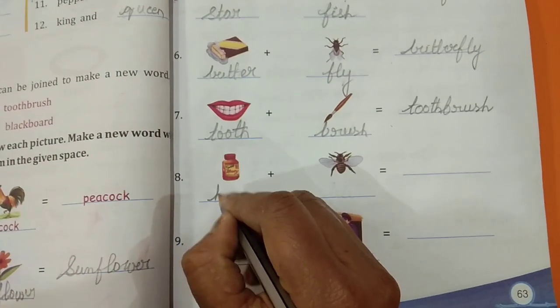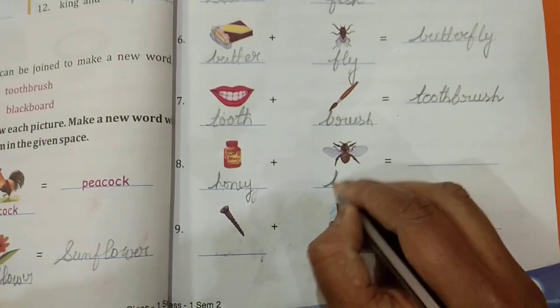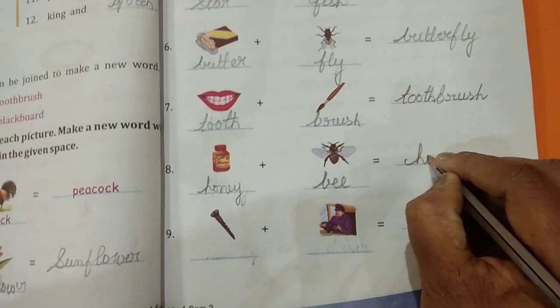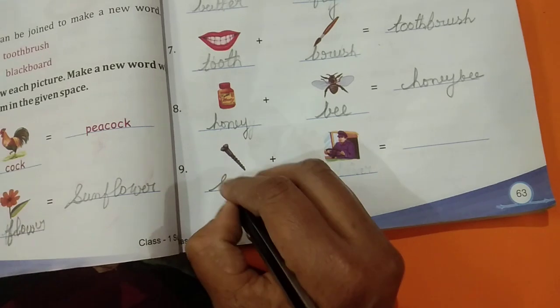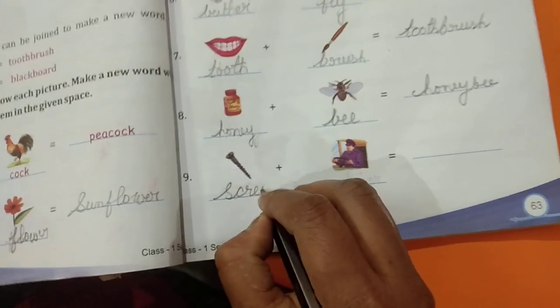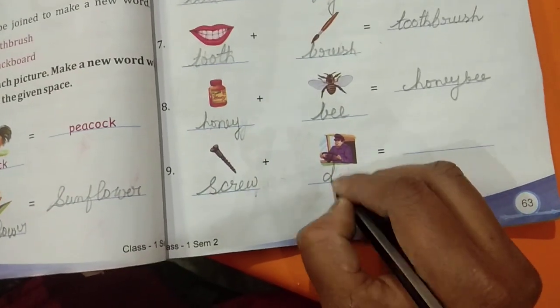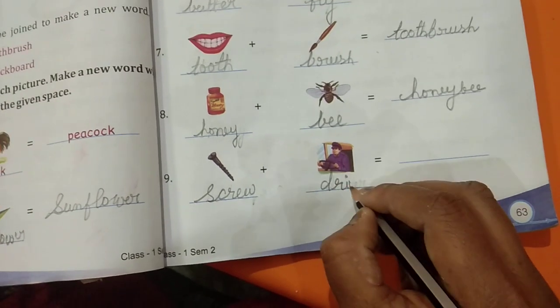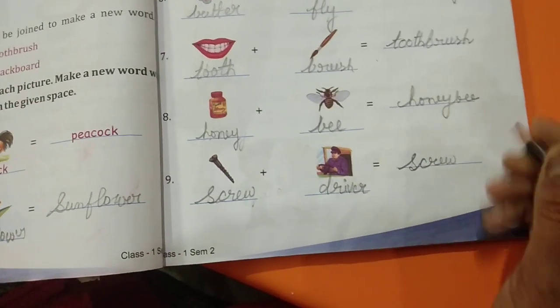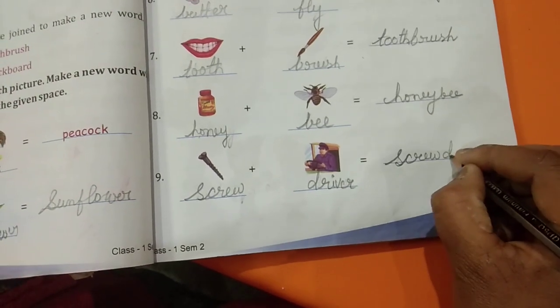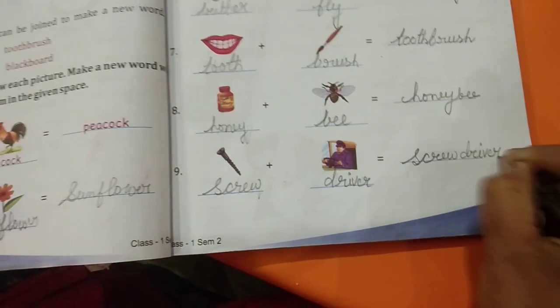Honey plus bee, honeybee. Next, screw, S-C-R-E-W, screw plus driver, screwdriver. Okay children.